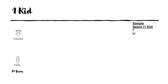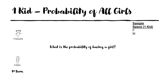Starting with the first kid: if you only have one kid, you're gonna have a male or a female, and your sample space is just male or female. So what's the probability of having all girls when you only have one kid? You have two possible choices, one of them is a female, so it's one half. Makes sense — everyone can pretty much get that even without any tree diagram.